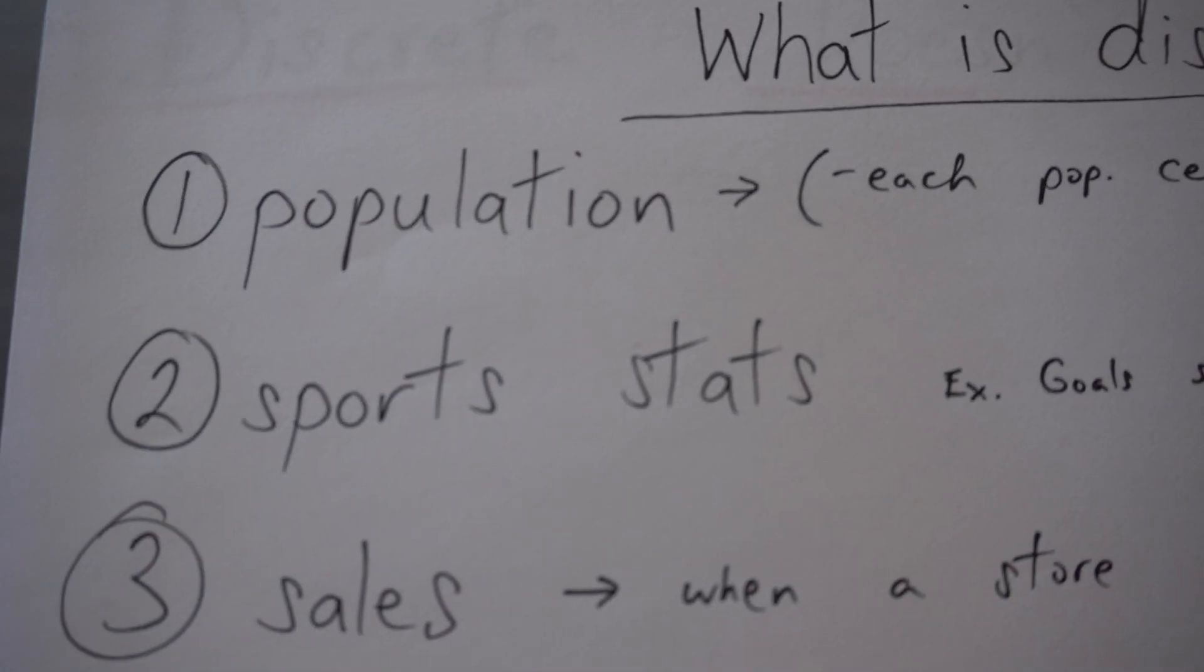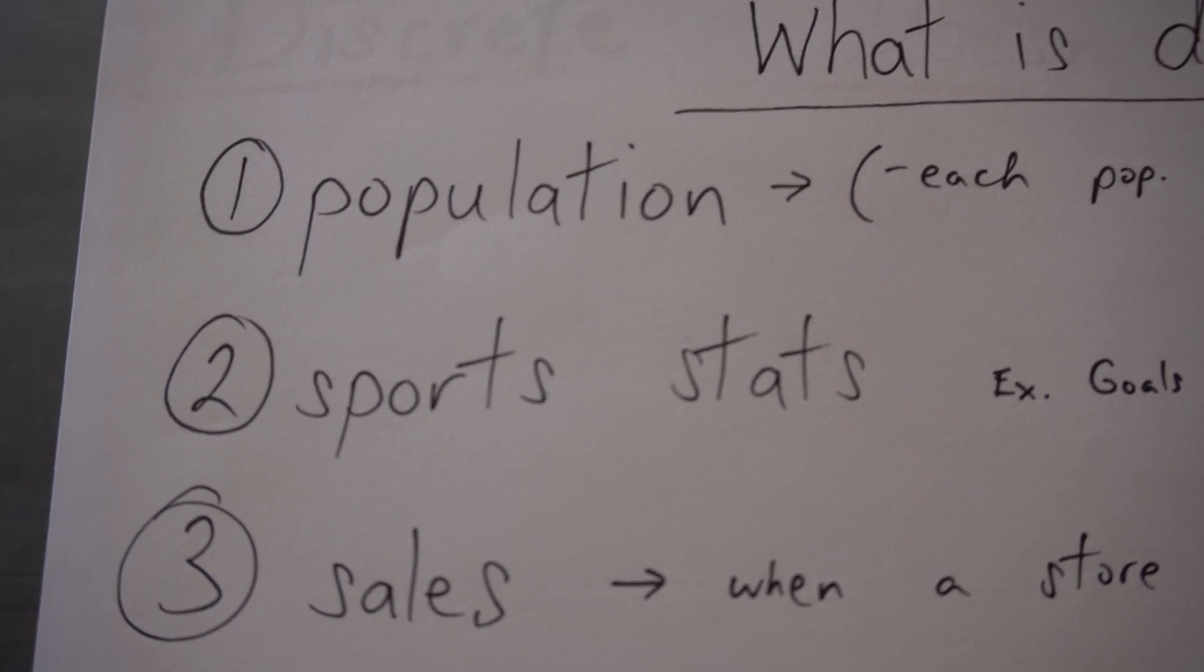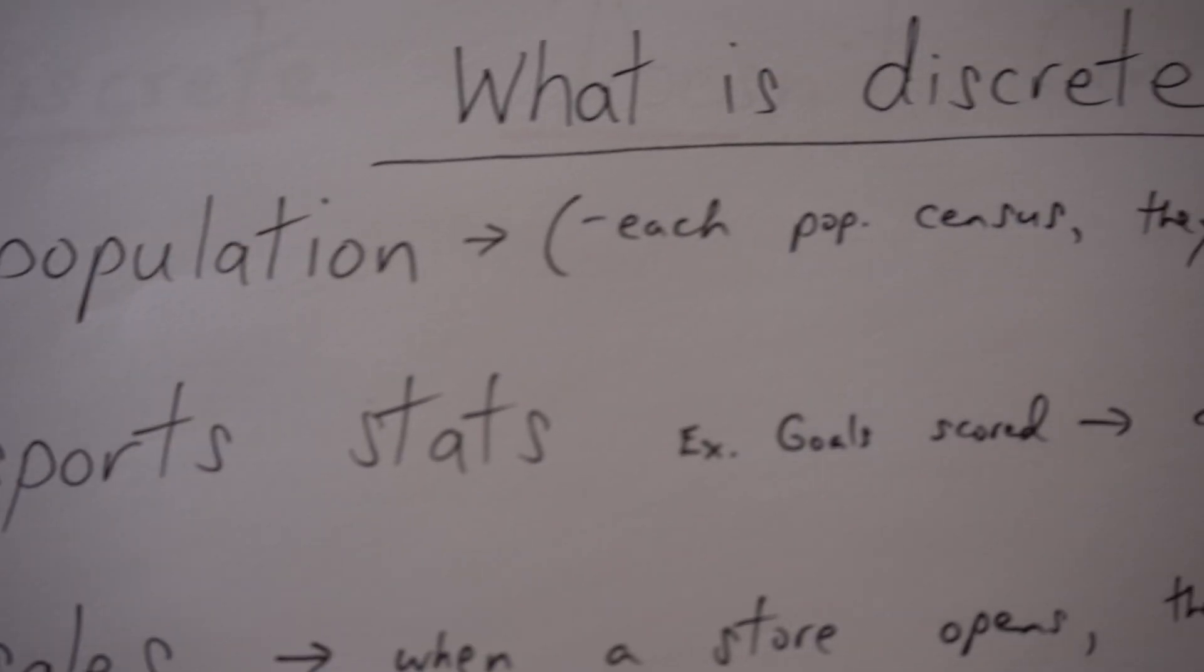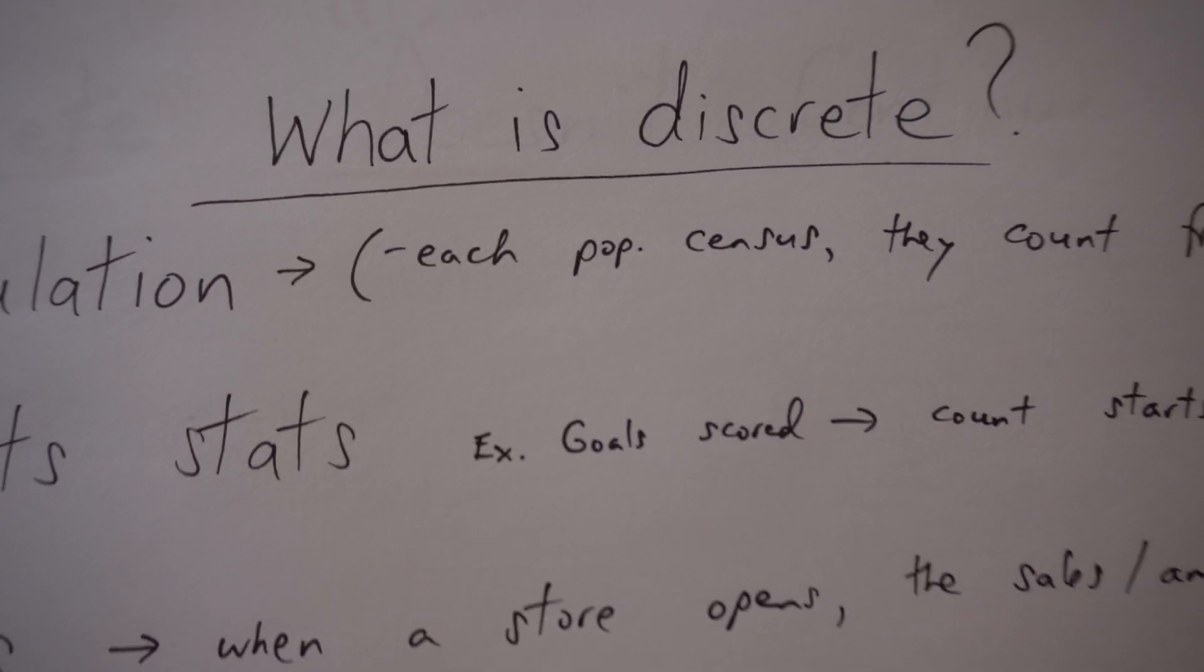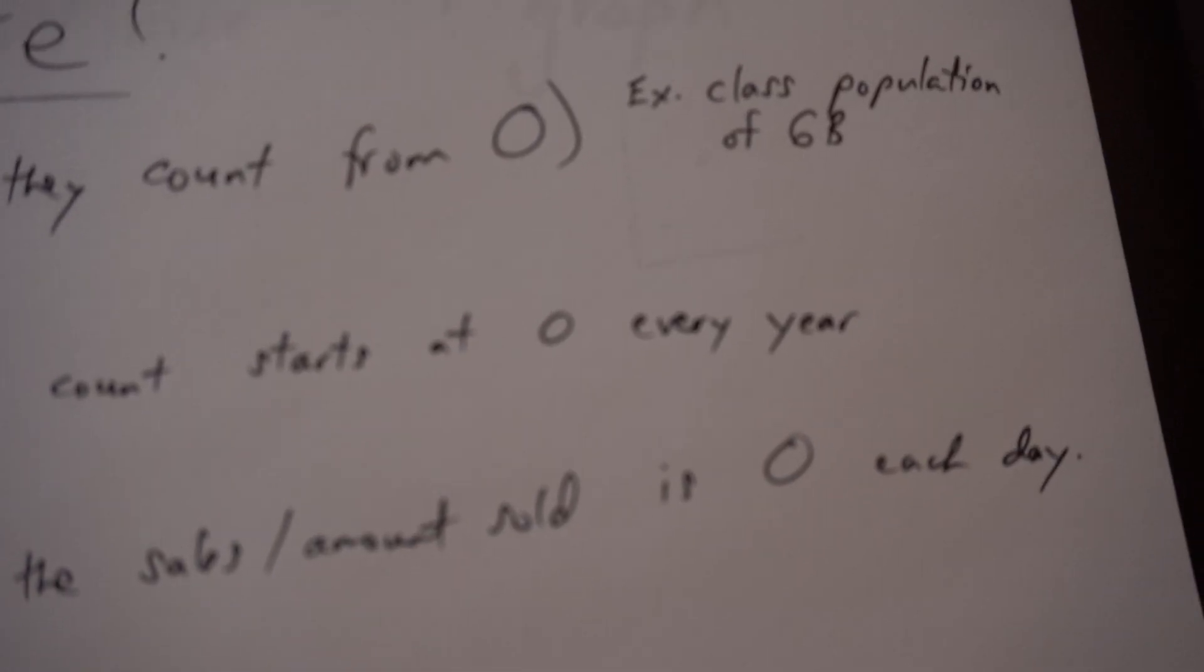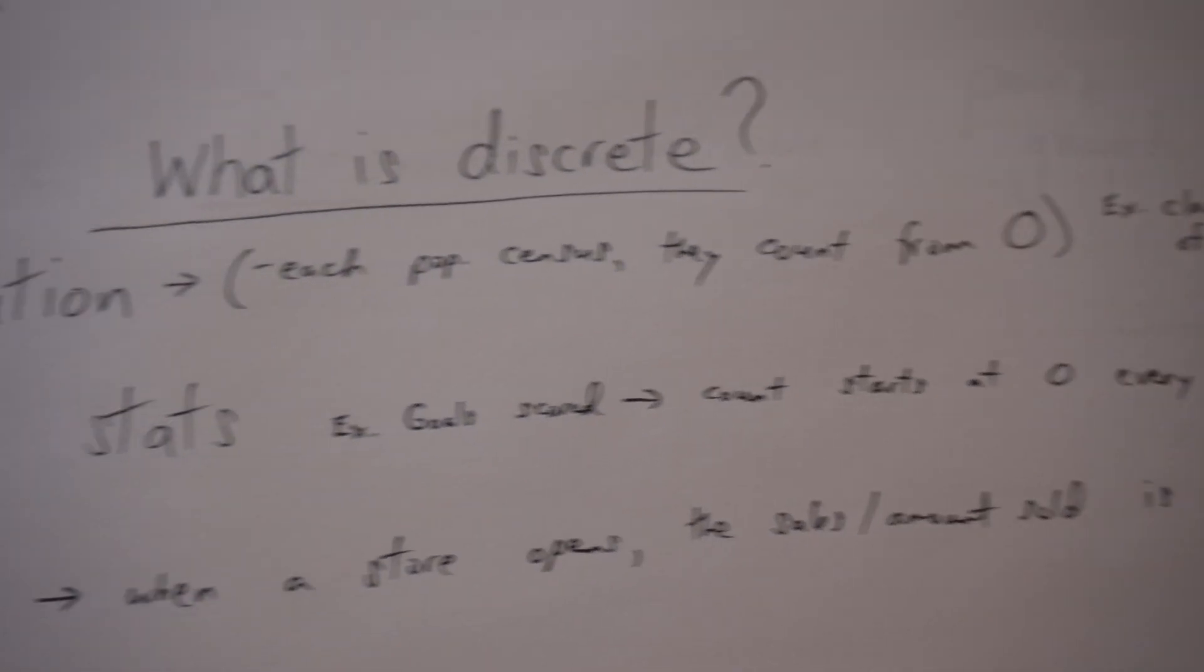Sports stats. Maybe one year someone goes on a tear and they score a lot of goals. Well, the next year they're going to start from zero again. So that is discrete.